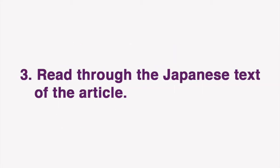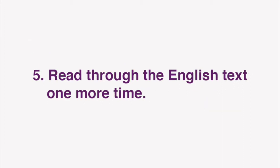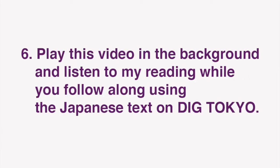Then, start by reading through the English text of the article. Next, read through the Japanese text of the article. Look up any Japanese words or phrases you aren't familiar with. Often, you should be able to infer the meaning from the corresponding English. Next, read through the English text one more time. Now you're ready for our lesson. In this video, I'll be reading the text of the Japanese article.